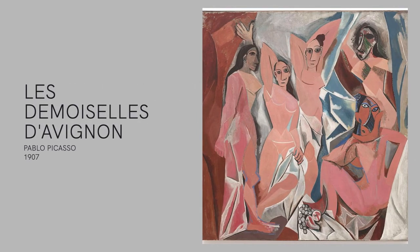One of the most interesting facts about this work is the impact that it had on later artists. One of these was Pablo Picasso. In his work Les Demoiselles d'Avignon, the viewers can see that he used this work by El Greco as inspiration. Although the subject is completely different, there are still similarities in the composition. Picasso uses the same cool tones, lack of setting, and elongated figures as El Greco.